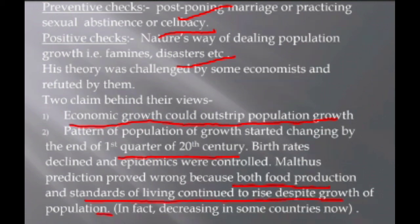The prediction of Malthus was proved wrong because both food production and standards of living continued to rise despite the growth of population. Because of good technology and better yield per piece of land, crop yields increased and prosperity grew. This is quite evident in countries like Germany, Italy, and Russia, where population growth continued alongside rising prosperity.